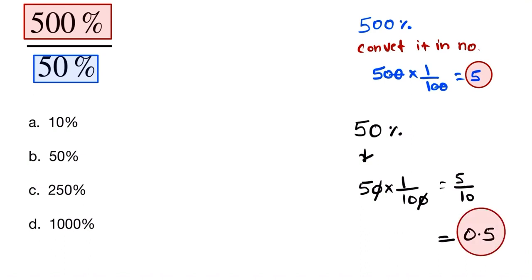So 500% is equal to 5 and 50% is equal to 0.5. Now we put the values one by one. So it is 5 by 0.5, so this one is equal to 10.